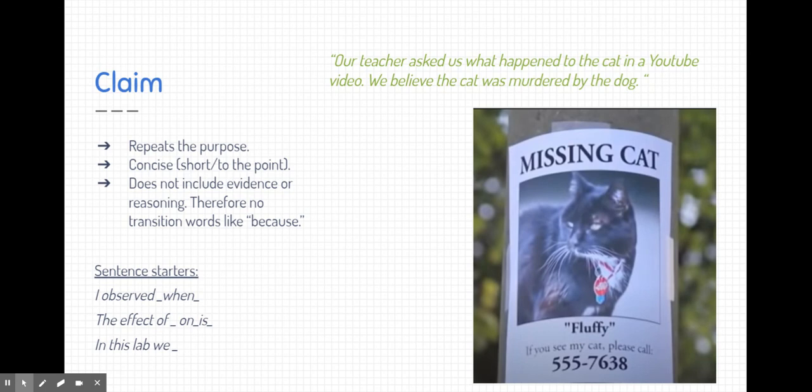Let's go through each of those individually. Let's start with the claim. Now, when you write a claim, the claim should repeat the purpose. We do this to let people know what we're talking about. You don't just run up to somebody and yell a claim. You usually give a little bit of background of what's going on and what you were doing. Now, claims are typically concise. They're short. They're to the point. So they don't really include the evidence or reasoning at this point. Therefore, we don't use words like because here because we're just trying to get the point across right away. If you look at the lower left-hand corner, there are some examples of sentence starters you can use when writing your own claims. These are optional. You do not have to use these exactly.